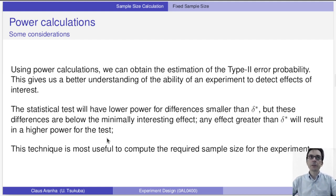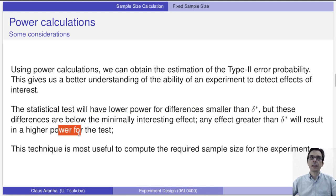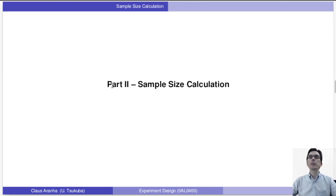So using power calculations, we can obtain an estimate of the type 2 error probability. This gives us a better understanding of the ability of an experiment to detect effects of interest. The statistical test will have lower power for differences smaller than δ*, but these differences are below the minimal interesting effect. So any effect greater than δ* will result in a higher power for the test. So this is a technique that is useful to calculate sample size for the experiment, which we're going to talk about in the next video. See you there.